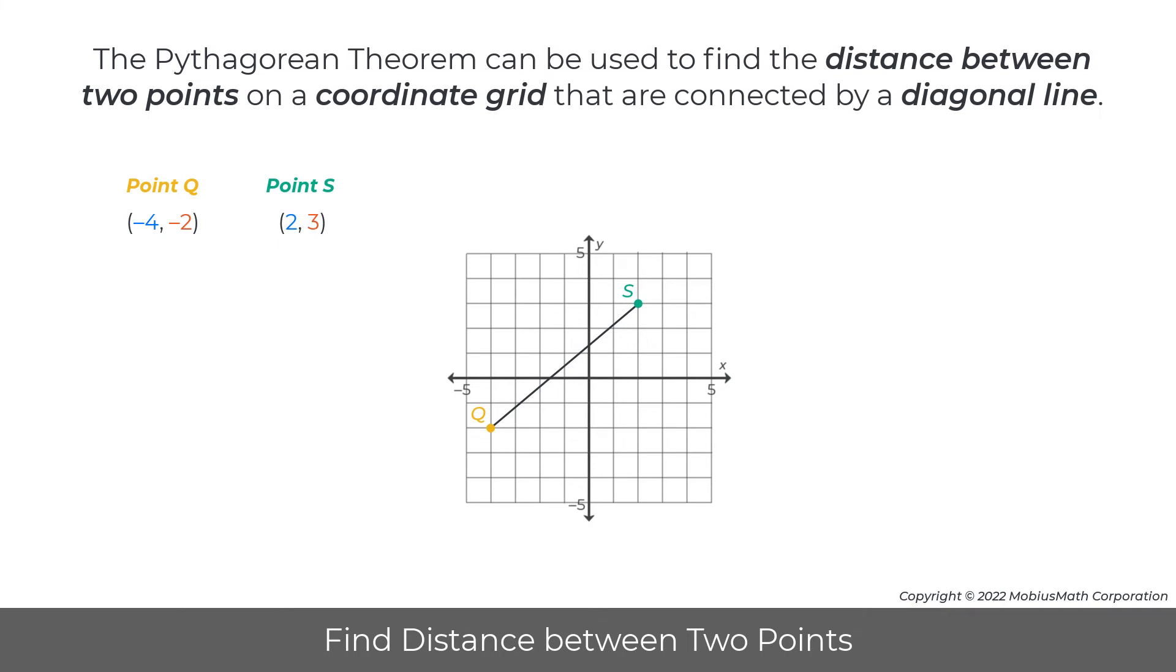The Pythagorean theorem can be used to find the distance between two points on a coordinate grid that are connected by a diagonal line.